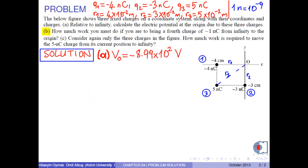Part B: How much work you must do if you are to bring a fourth charge of negative 1 nanocoulomb from infinity to the origin?